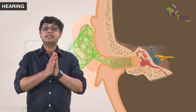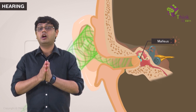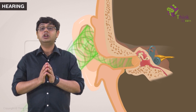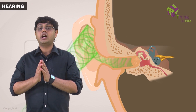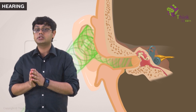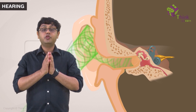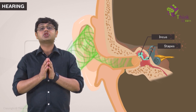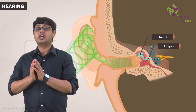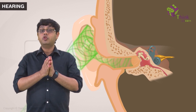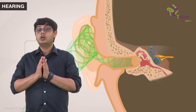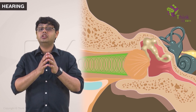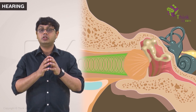The tympanic membrane is attached to the head of the malleus, and its vibration is in turn transmitted to the head of the malleus. Movement of the head of the malleus is transferred to the rest of the ossicular chain, and the movement of this chain within the tympanic cavity amplifies the energy transmitted.